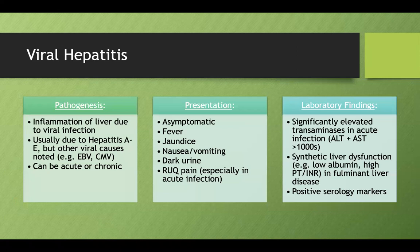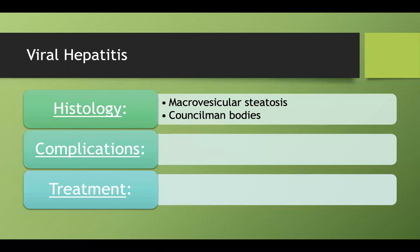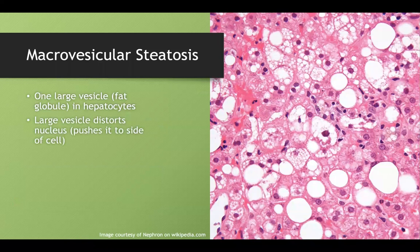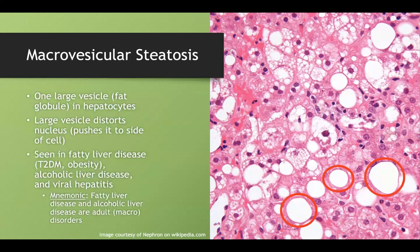Another lab finding is positive serology markers. Histologically, regardless of the hepatitis type, you can see macrovesicular steatosis — that big fat vesicle pushing everything out of the way — seen in older patients with fatty liver disease, alcoholic liver disease, and viral hepatitis. My mnemonic: macrovesicular in macro (adult) conditions; microvesicular in Reye syndrome, a childhood disorder.